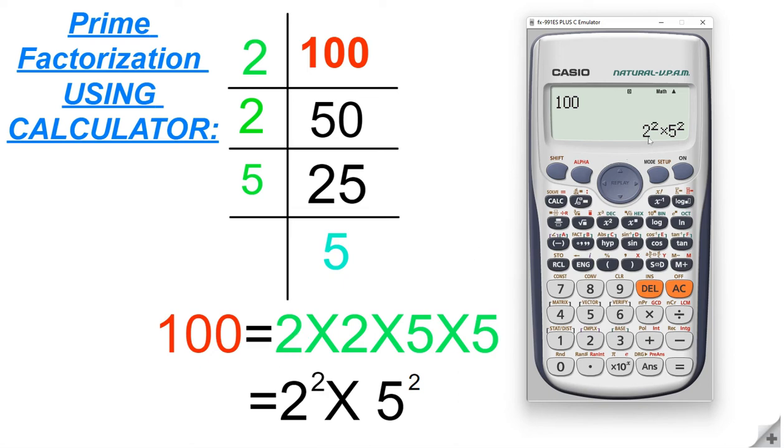Here we can split this 2 to the power 2 into two factors 2 times 2, and 5 to the power 2 we can write as 5 times 5. So these are the prime factors for this number 100 and similarly you can use this concept for large numbers.